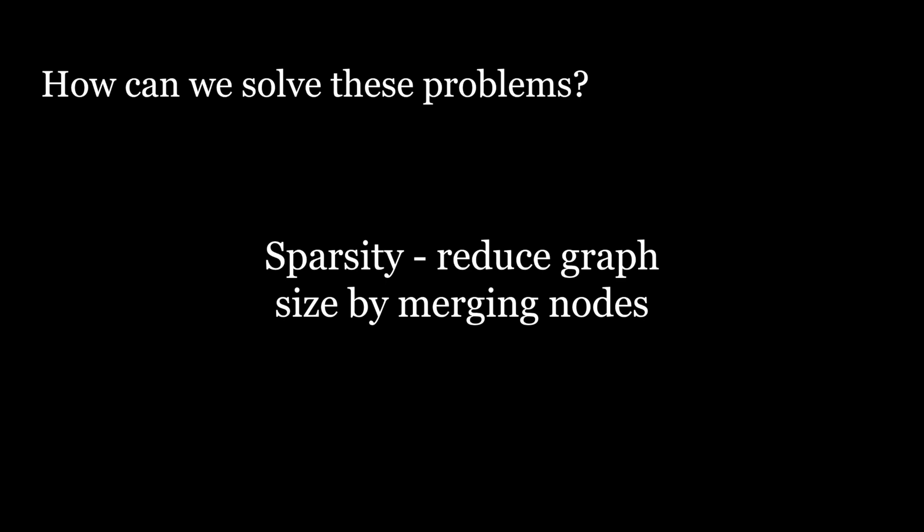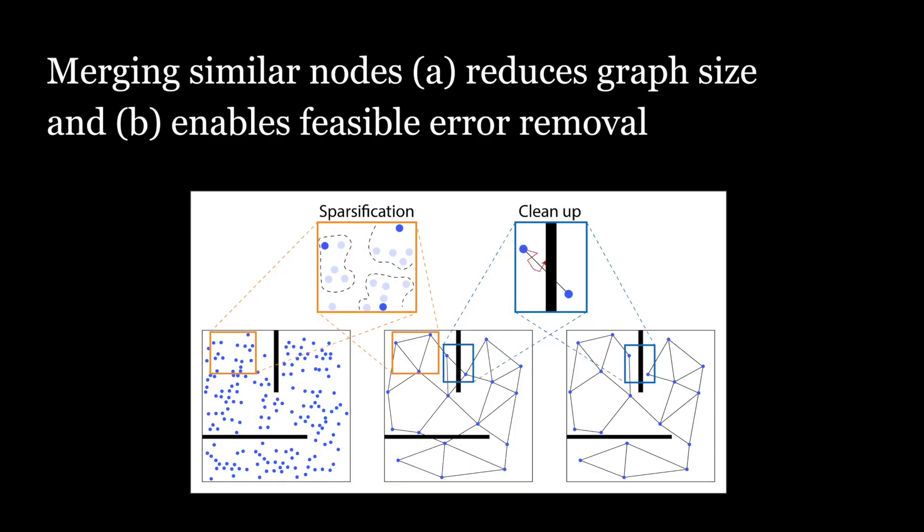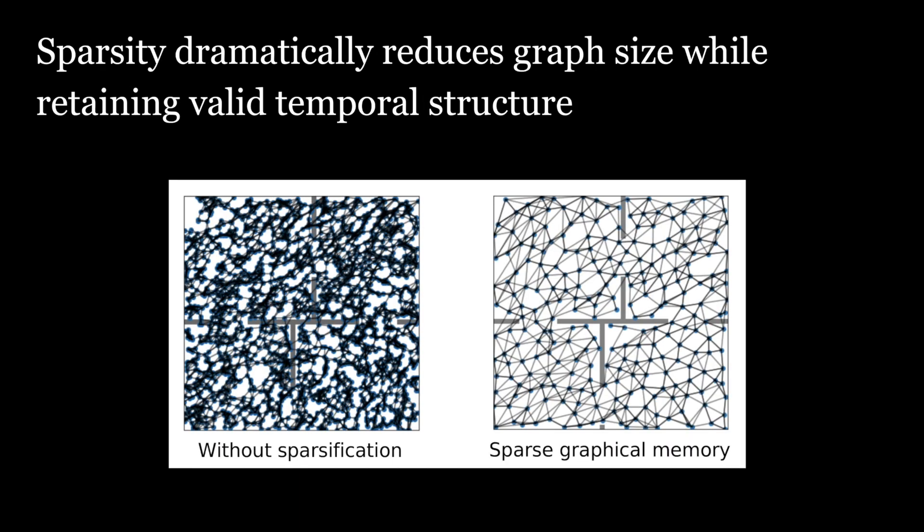In this work, we address these problems with what we call sparsity. We arbitrarily reduce the graph by merging nodes in a principled way. Merging nodes reduces the graph size, which makes localization efficient and enables feasible error removal in a self-supervised manner. Here is what a graph in a simple four-room environment looks like before and after sparsification. The original graph has many faulty connections across the walls, and sparsifying abstracts the graph and removes most of these errors.